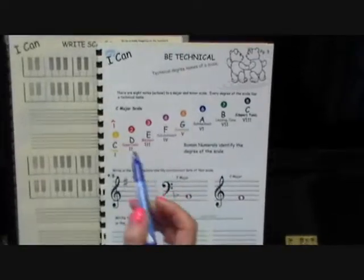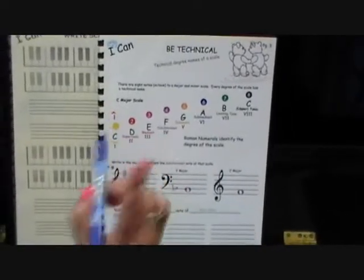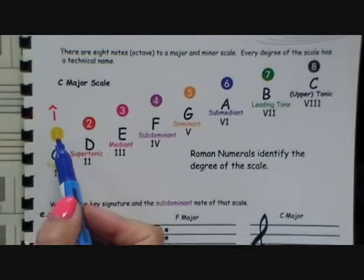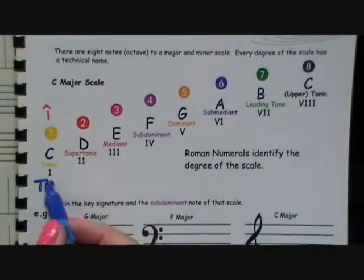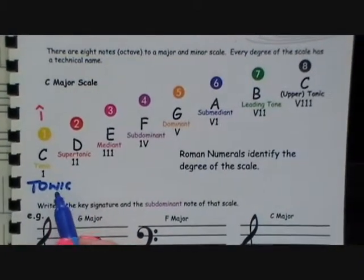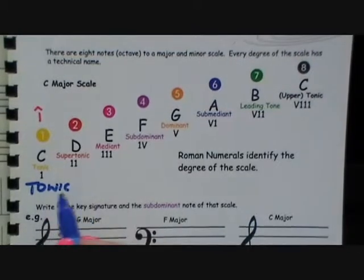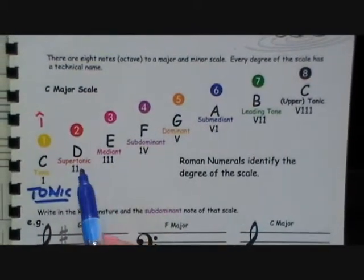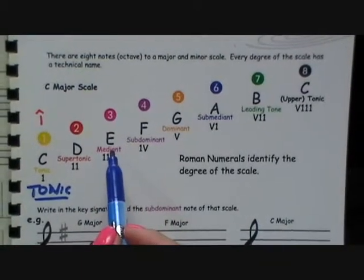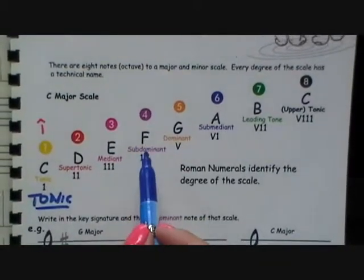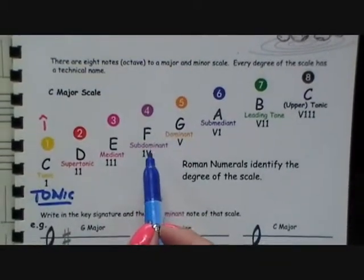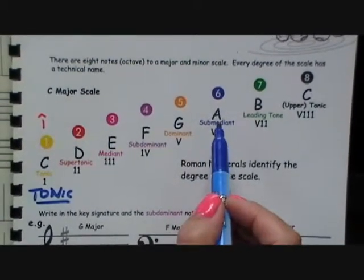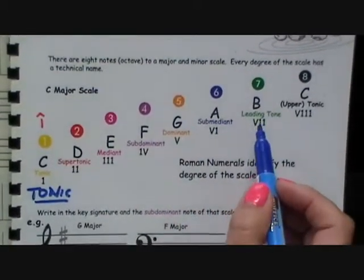Let's take the scale of C. The first note of a scale would be called the tonic — that's an important note, the key note, also known as the tonic. The second degree: supertonic. The third degree: mediant. The fourth: subdominant. The fifth: dominant. The sixth: submediant. The seventh: the leading note.